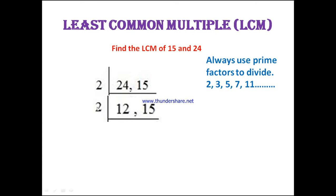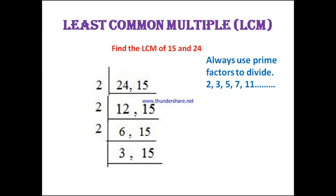In 12, how many times does 2 go? 6 times — 2 times 6 are 12. Then check 15 — 15 cannot be divided by 2, so copy it down. The next row we receive is 3 and 15.